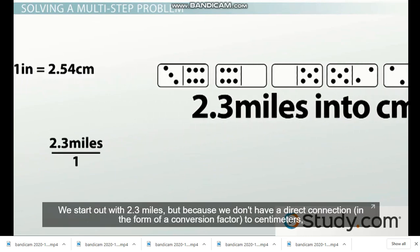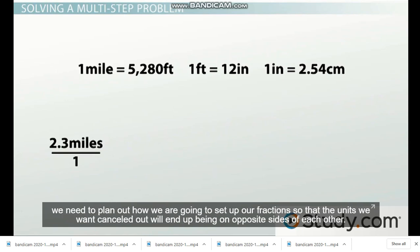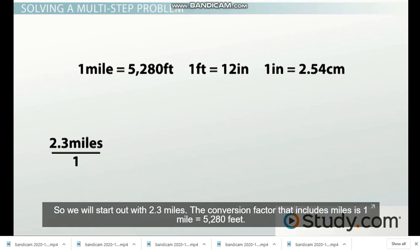We start out with 2.3 miles, but because we don't have a direct connection in the form of a conversion factor to centimeters, we need to plan out how we are going to set up our fractions so that the units we want canceled out will end up being on opposite sides of each other. So we will start out with 2.3 miles.